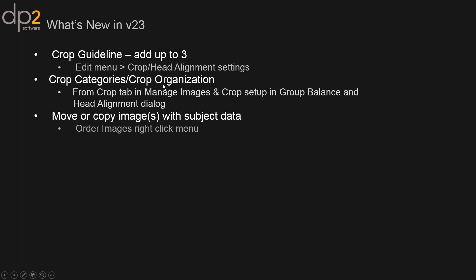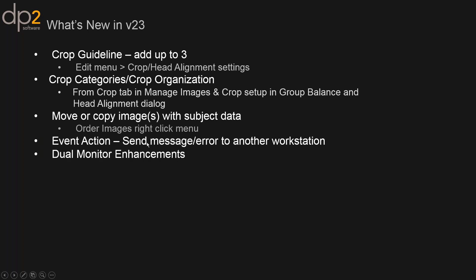Another one in version 23 is the ability to move or copy images with their respective subject data record. There's at least one way to get to it off your image inside your order: right-click, and there is now a Move or Copy Images option in your right-click menu as of version 23.